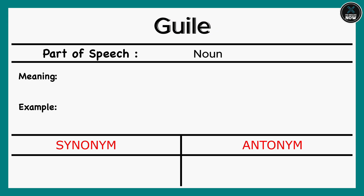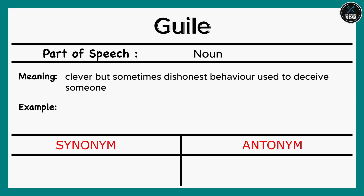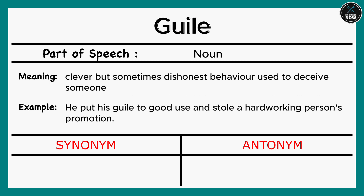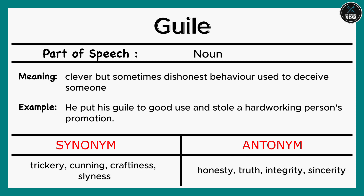Guile: Clever but sometimes dishonest behavior used to deceive someone. Example: He put his guile to good use and stole a hardworking person's promotion. Synonyms: Trickery, Cunning, Craftiness, Slyness. Antonyms: Honesty, Truth, Integrity, Sincerity.